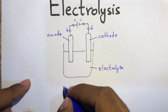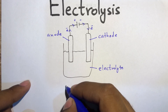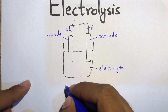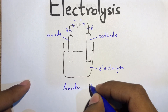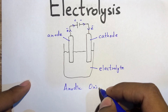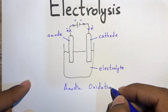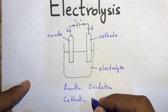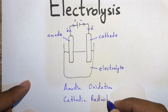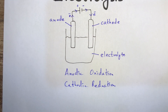This shows that oxidation occurs at the anode and reduction occurs at the cathode. You can remember this as anodic oxidation and cathodic reduction.